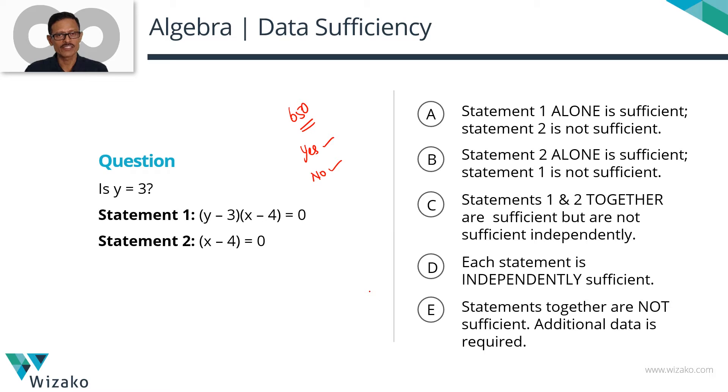If by using the information in the statements, either 1, 2 or together, if you come up with an answer saying that y could be a 3, y need not be a 3, I'm not sure, I'm not able to conclusively give you an answer, then the data is not sufficient, right? So you've got clarity on how this works.